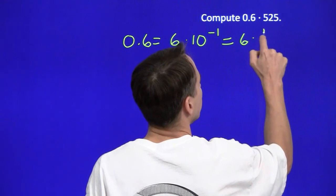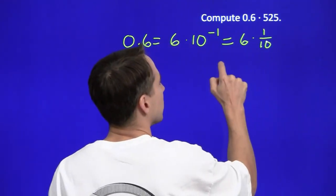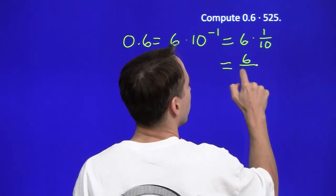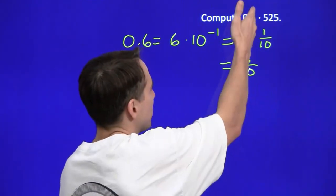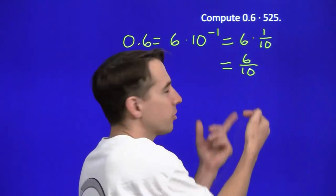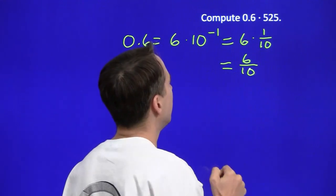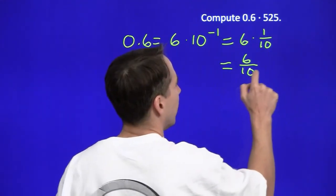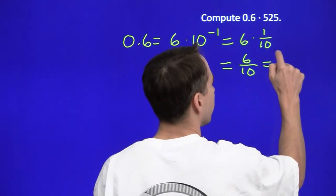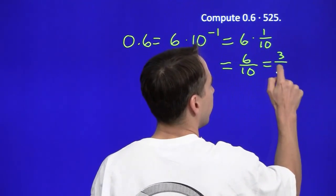6 times 1 over 10 is 6 over 10. Oh yeah, I guess we could have just seen that, right? 6 tenths? Could have gone straight from here to here. 6 tenths, we'll take out the common factor of 2, and that leaves us 3 fifths.